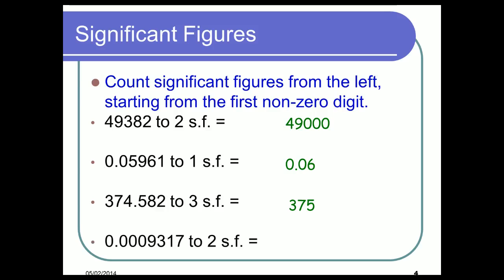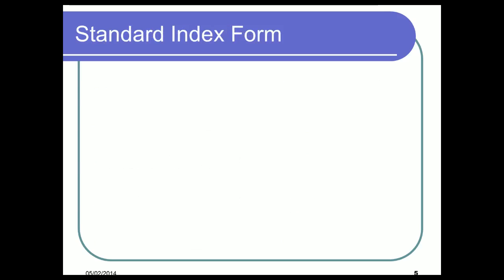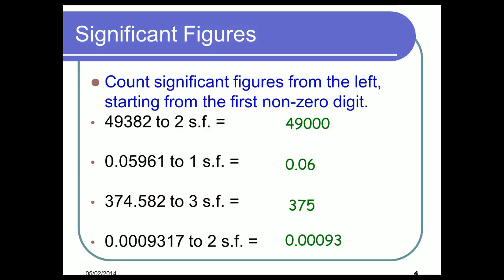What about 0.9317 to two significant figures? Try this one yourself. The first non-zero term is a nine, then a three. We round after that point — we've got 31, the nearest ten is 30. We write down everything to the left and get 0.93. And that covers significant figures and decimal places.